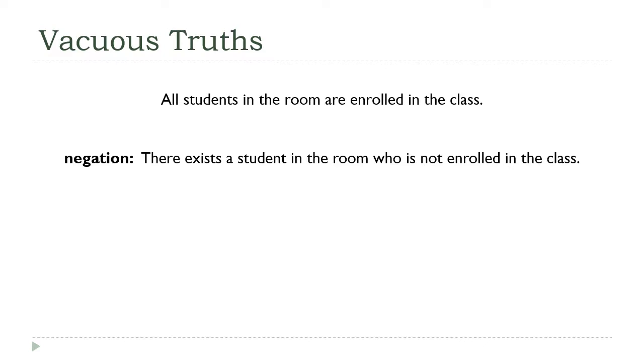So I've got the negation here using the methods we talked about in the last lecture, and it will be: there exists a student in the room who is not enrolled in the class. Now if the room is empty, this is more clearly false.